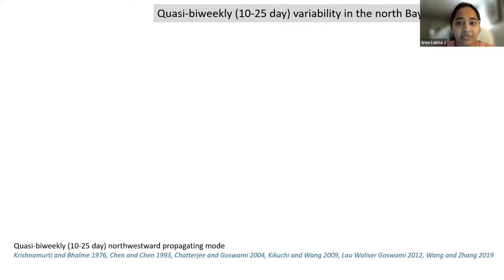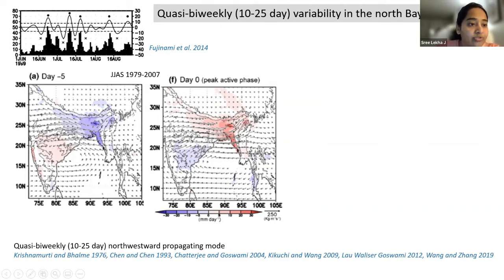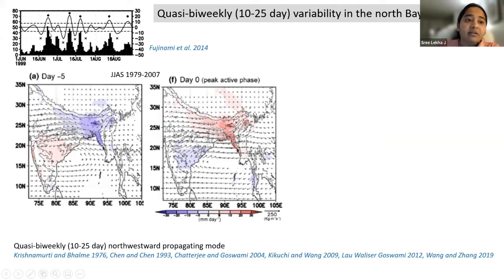What is this quasi bi-weekly variability? The Asian summer monsoon has two dominant modes of intra-seasonal variability: the 30 to 60 day mode, or northward propagating mode, and the 10 to 25 day mode called the quasi bi-weekly mode, which is a north-westward propagating mode. The top panel here, from Fujinami et al. 2014, shows the time series of AFRO-date rainfall averaged over the Bangladesh region for the summer monsoon season June through September 1999. The thin black line shows the 7 to 25 day filtered rainfall anomalies, and you can see a very distinct 10 to 25 day time scale in the rainfall over the Bangladesh region.